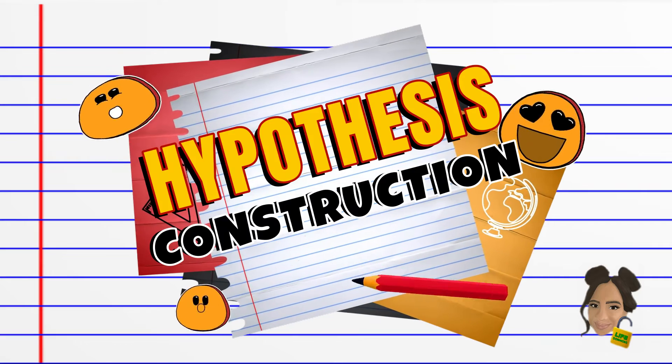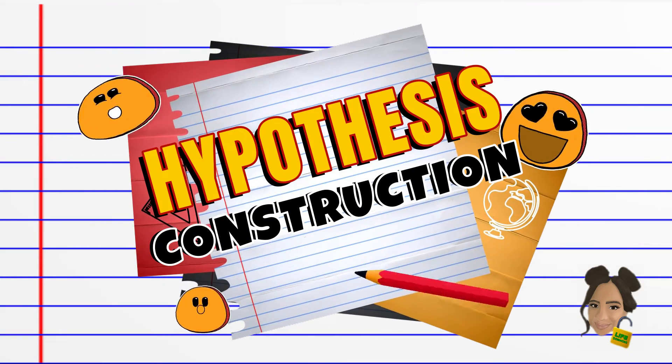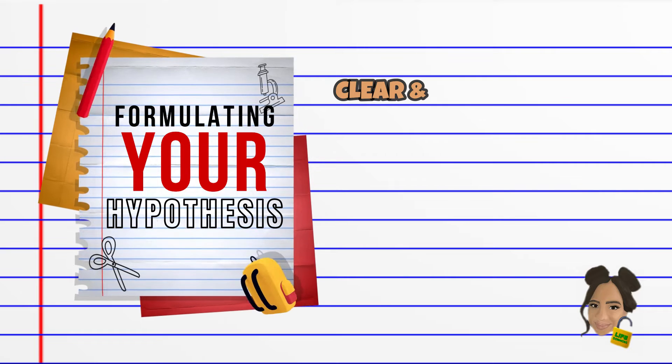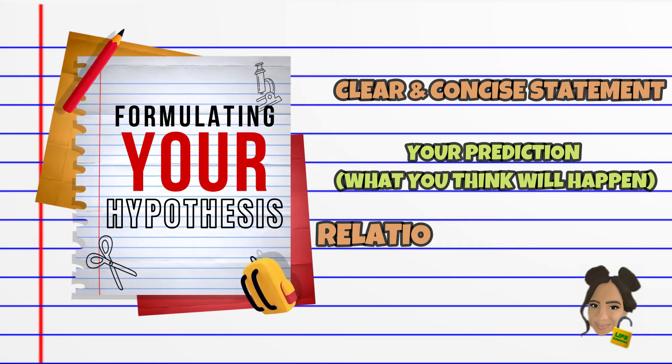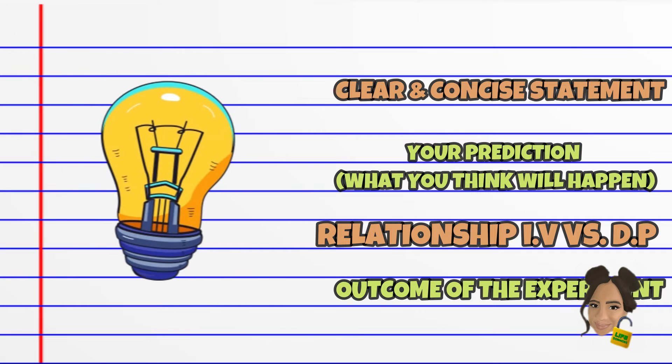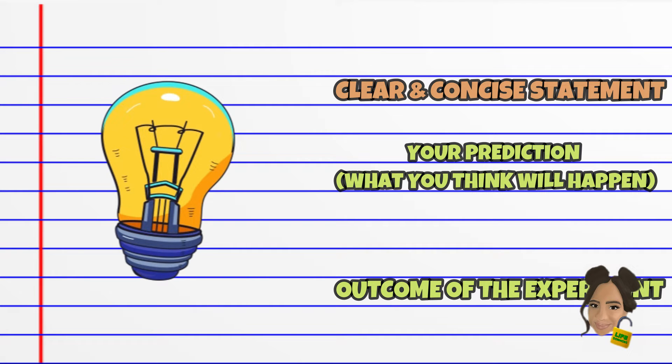Now let's move on to wording and composing a proper hypothesis. A hypothesis is a clear and concise statement of your prediction of what you think will happen in the relationship between the independent and dependent variable for the outcome of this experiment.